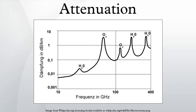In physics, attenuation is the gradual loss in intensity of any kind of flux through a medium. For instance, sunlight is attenuated by dark glasses, X-rays are attenuated by lead, and light and sound are attenuated by water.